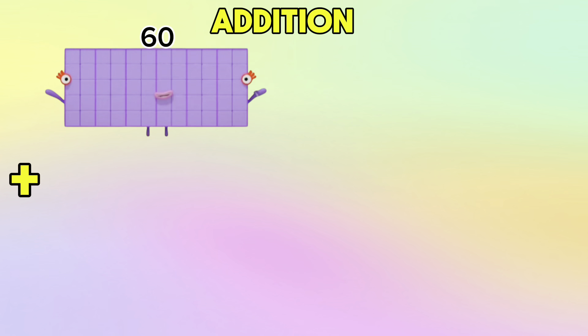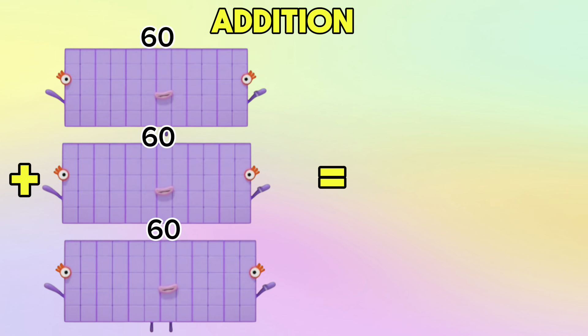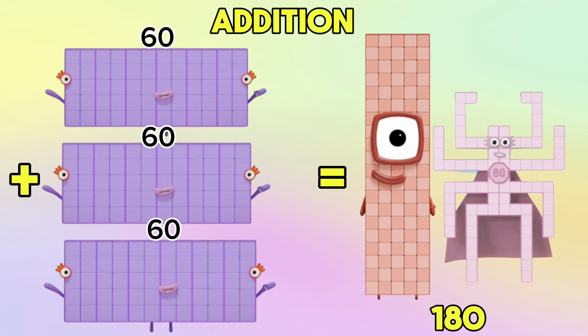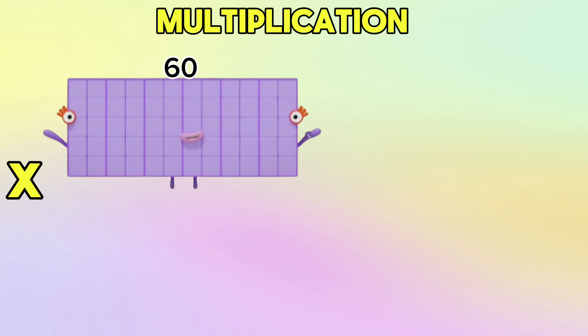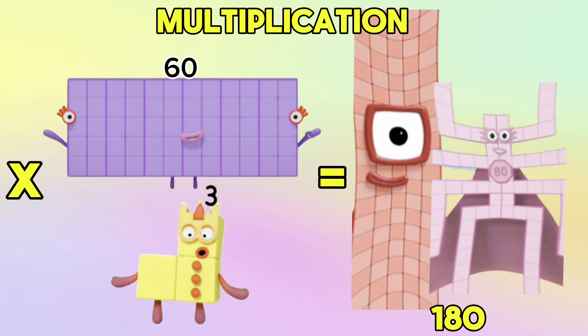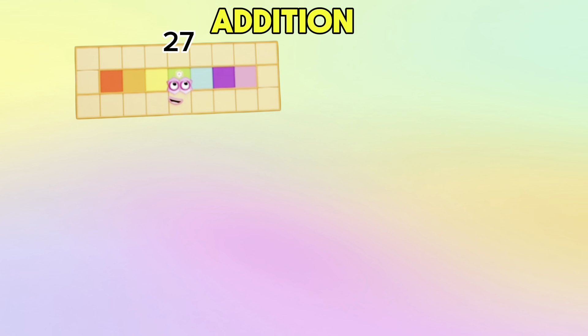Another one: 60 plus 60 plus 60 is equals to 180. In Multiplication, 60 multiplied by 3 is equals to 180. Let's try another example.